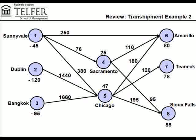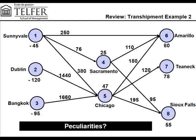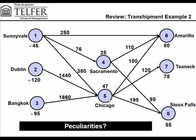So if you recall, this was one of the slides I showed you in the previous tutorial session, and I asked you to tell me anything peculiar about this network diagram. A few things to notice here: in this case, we have two transshipment points at Sacramento and Chicago. What's different about these transshipment points is that they have their own demand. Sacramento has a demand of 25 and Chicago has a demand of 47.